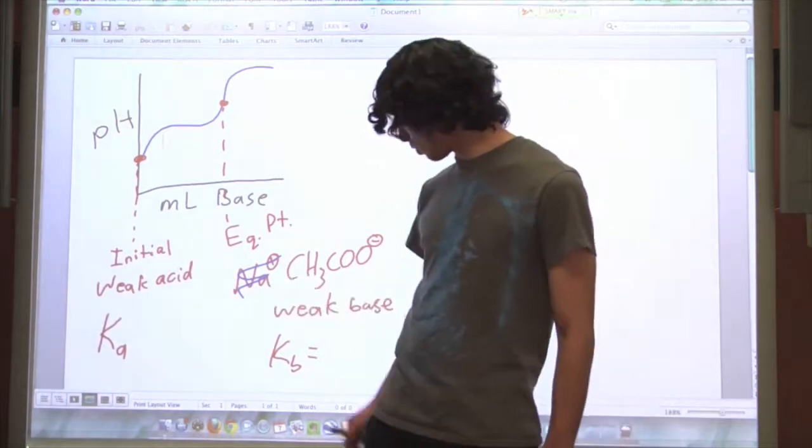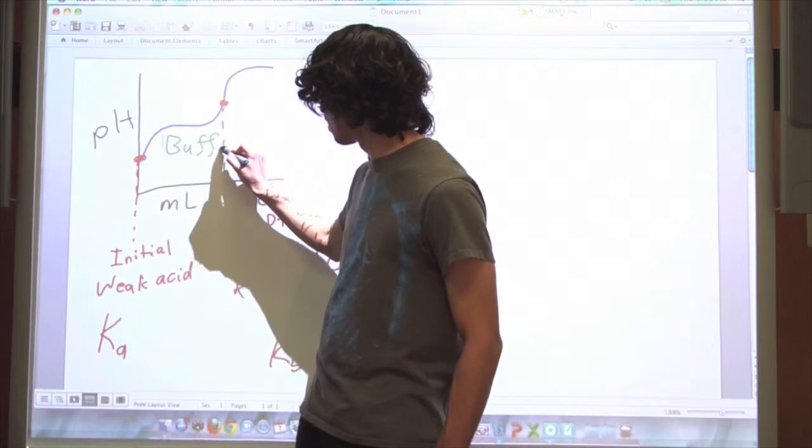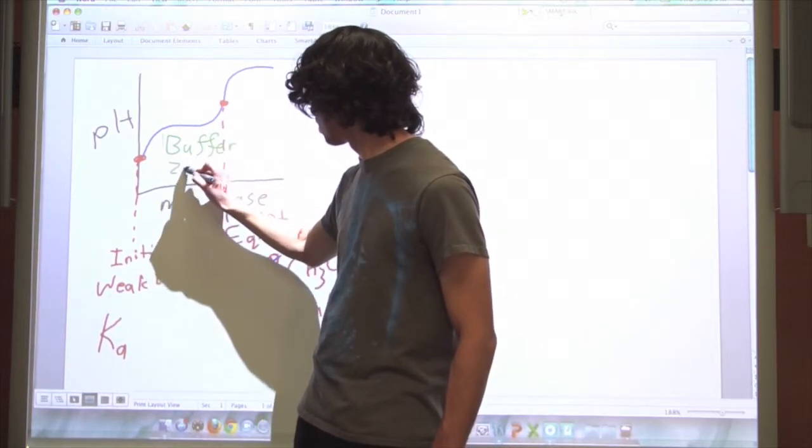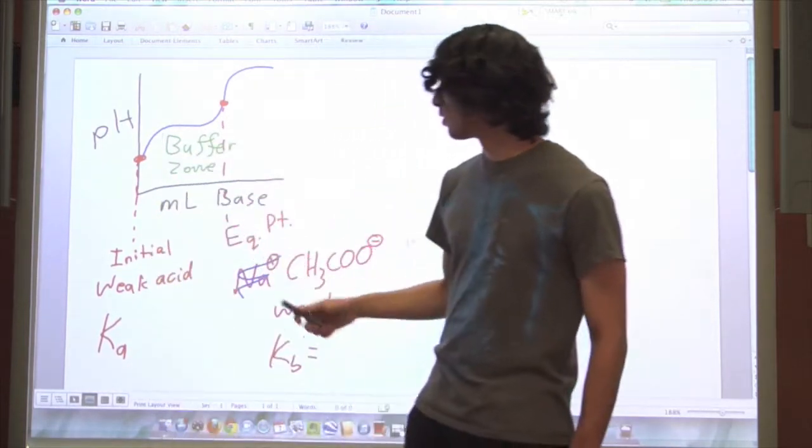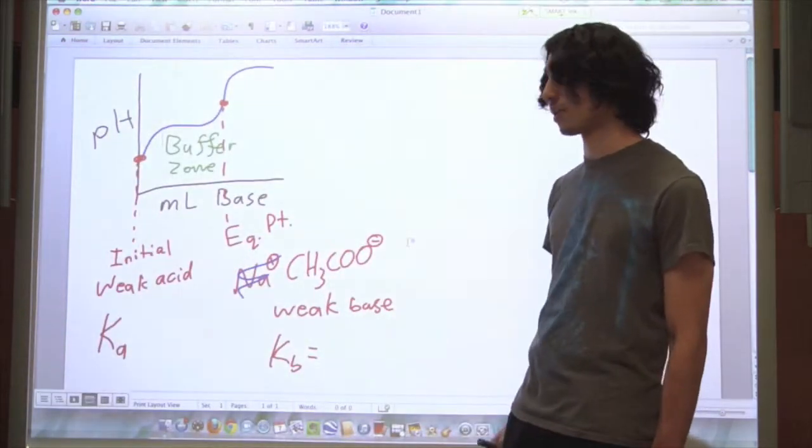So what about in between these two points? This is known as the buffer zone. And my writing went over a little bit there, but that's between the equivalence point and the initial point, is the buffer zone.